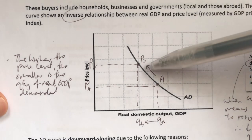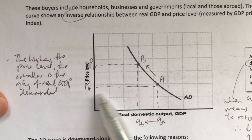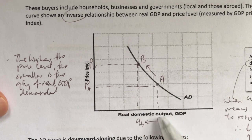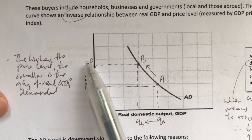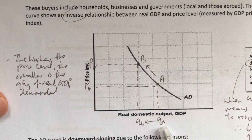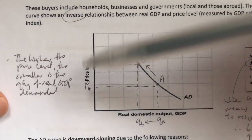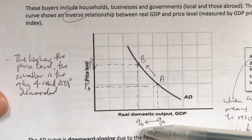Take a look at this illustration. If initially the price level was at PA, the amount of quantity demanded or GDP demanded is QA. However, if the price level increases to PB, the amount of real GDP being demanded falls. So you can see there's a negative relationship — price increases, GDP demanded falls.